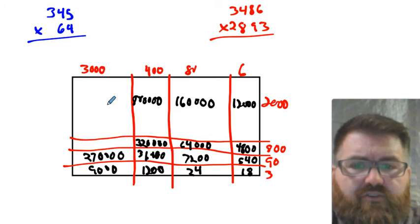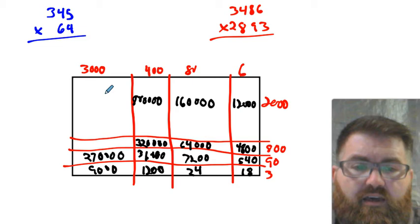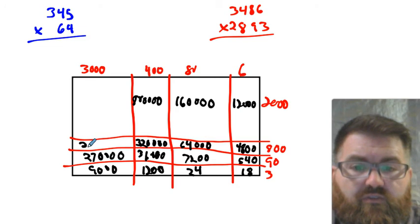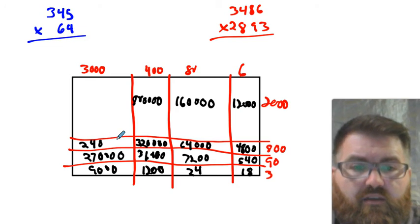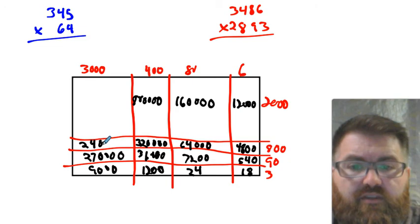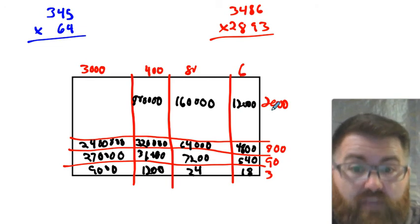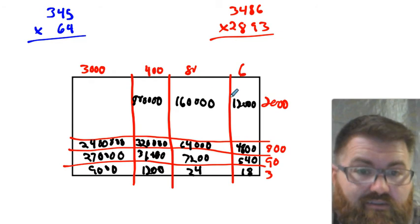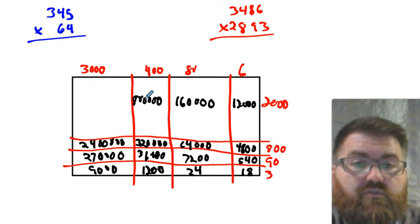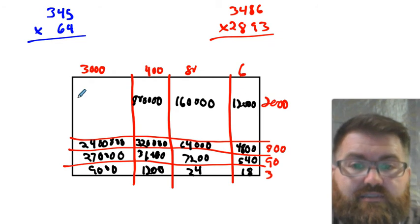3,000 times 800 — that's 1,000s times 100s, that's 100,000s. 3 times 8 is 24, so that's 2,400,000. 3,000 times 2,000 — 1,000 times 1,000 is a million. 3 times 2 is 6, so that's 6,000,000.